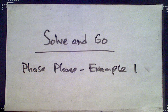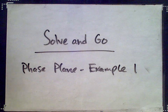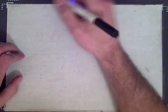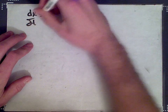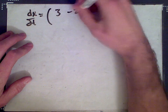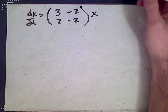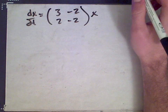Hi, welcome to SolveAndGo.com. This is the first example of a phase plane — it's a differential equations question. We have a two-dimensional differential equation given by dx/dt equals the matrix [3, -2; 2, -2] times x, and we're asked to draw a phase plane diagram of the solutions.